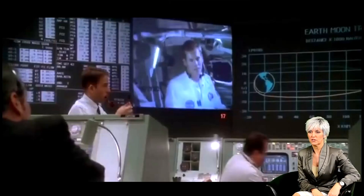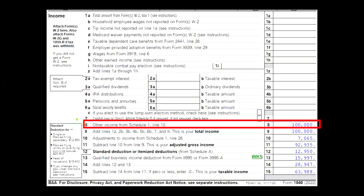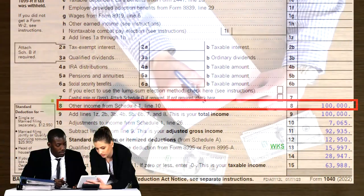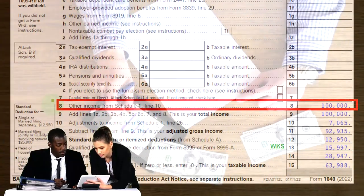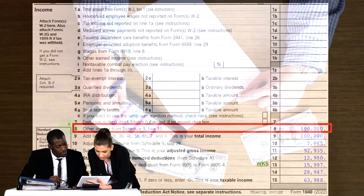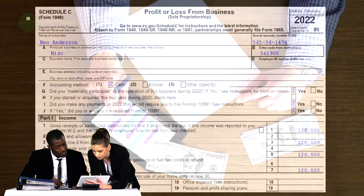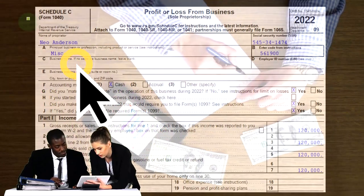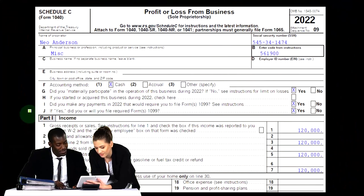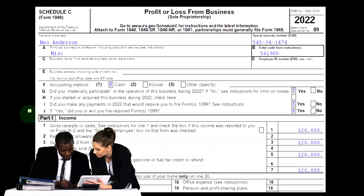Looking at Form 1040, we're here on line eight — other income from Schedule 1. This flowed in from the Schedule C to Schedule 1 to the first page of the 1040. This is the net income, not the gross income. Here's a Schedule C, which is in essence an income statement. Income minus expenses — the net is what flowed through Schedule 1 and to the 1040.